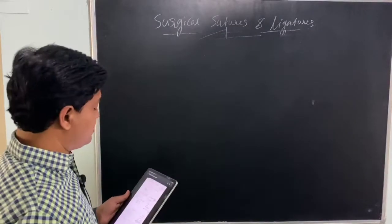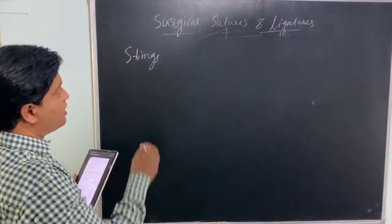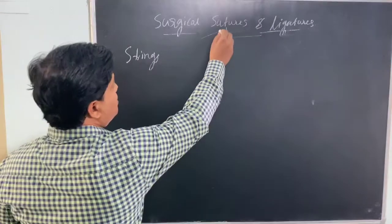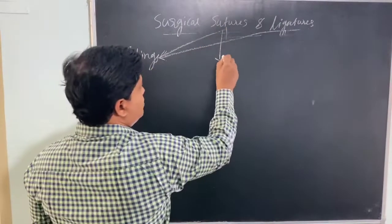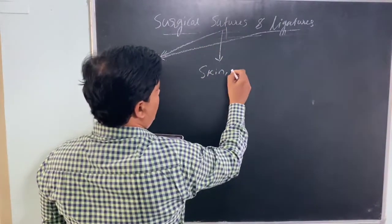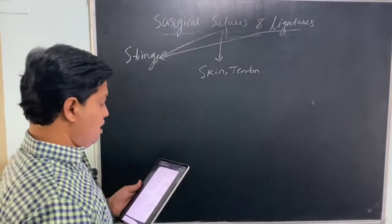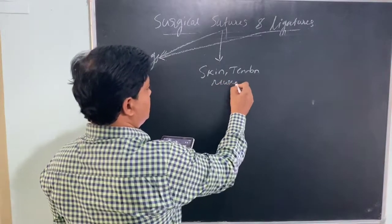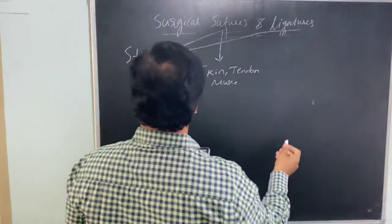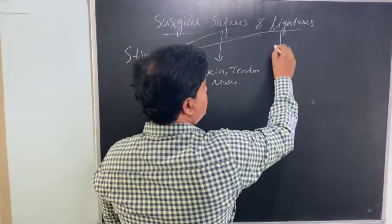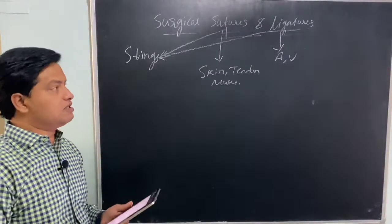So what are sutures and ligatures? They are sterile strings. Sutures are used on skin, tendon, or muscle. Ligatures are also sterile strings which are used on arteries or veins — that is, they are used on blood vessels.